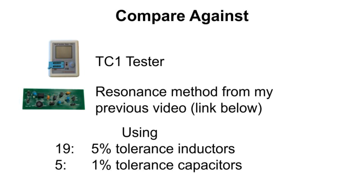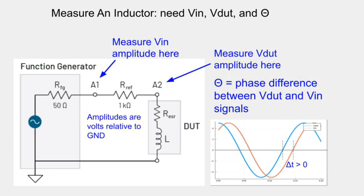I'll compare this method against the popular TC1 tester and also against a resonance method I presented in a previous video. I'll be using 19 different 5% tolerance inductors and five 1% tolerance capacitors. Unlike the TC1 and the resonance method, this method allows you to choose the test frequency to match a datasheet or your planned operating frequency.